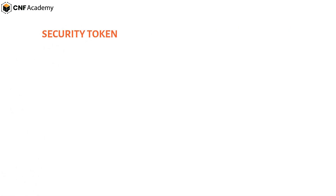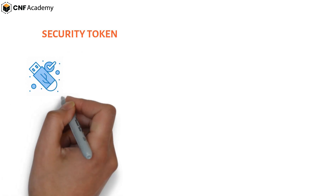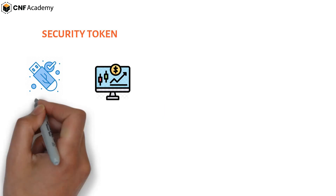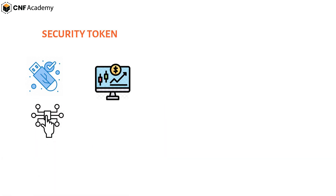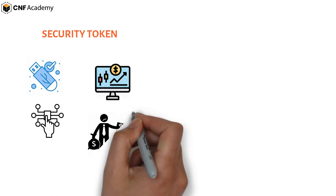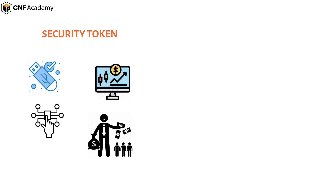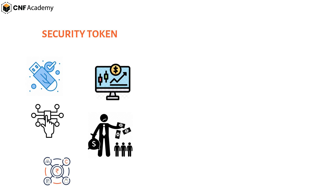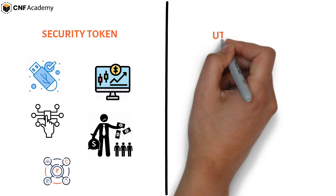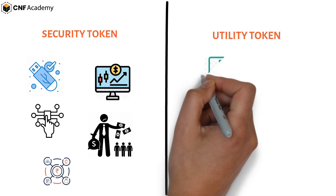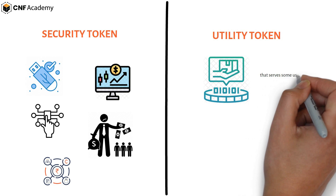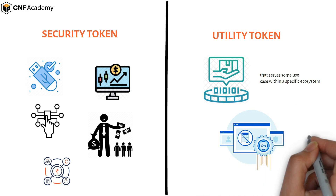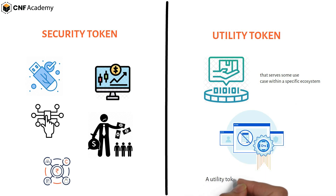Security tokens are similar to securities traded in stock markets except they have a digital provenance. They resemble traditional stocks and often promise equity in the form of ownership or a dividend payout to holders. The prospect of price appreciation for such tokens is a major draw for investors. A utility token is a crypto token that serves some use case within a specific ecosystem, allowing users to perform some action on a certain network. A utility token is unique to its ecosystem.